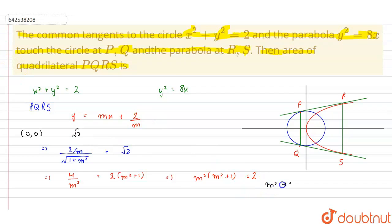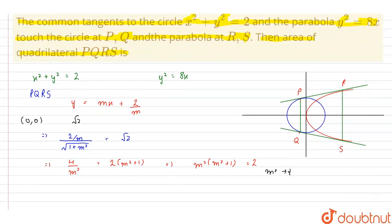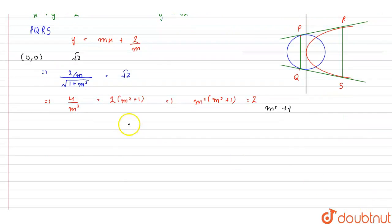To solve this we will replace m² by t so we get a quadratic equation in t which is t² + t - 2 = 0. On factorizing we get (t + 2)(t - 1) = 0.